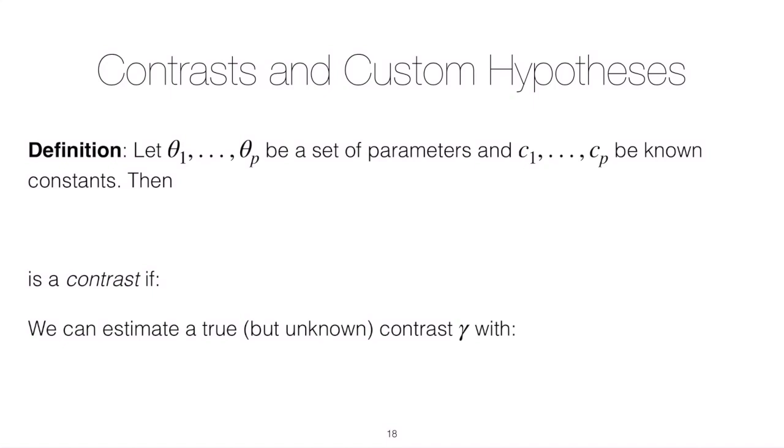So let's start with a set of p parameters and we'll call them theta, and ultimately these thetas will turn into mu's which will be the mean of a response for each level of a factor. We'll also start with a set of constants c1 through cp. These constants are known but the parameters of course are not necessarily known.